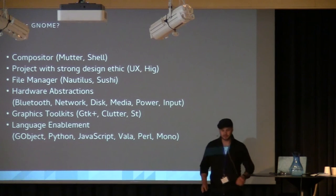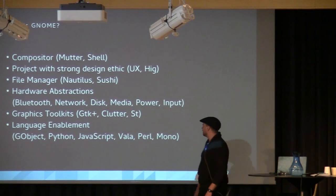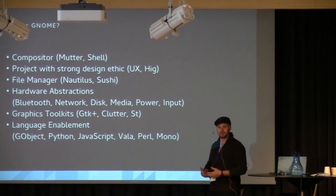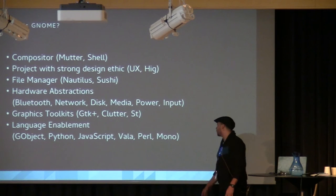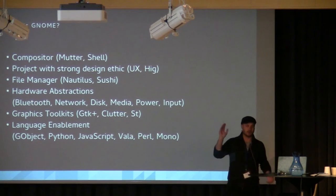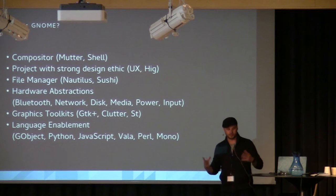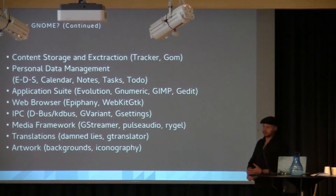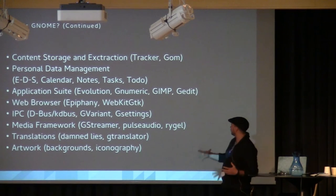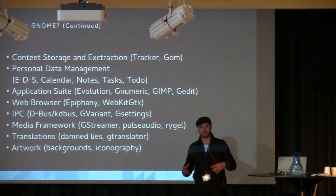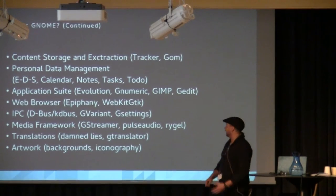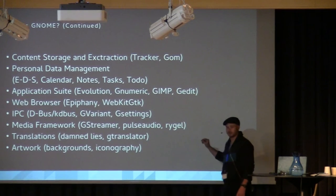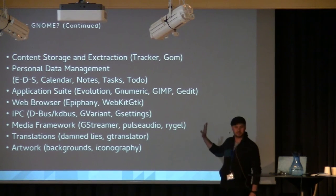We have three graphics toolkits, which hopefully will someday condense into one or two. We have language enablement — GObject is the underpinning of everything. Python integration, JavaScript, Vala, Perl, Mono — and I think there's even Rust and GNOME bindings. We're on the cutting edge of all of these. We have a content storage engine in Tracker and GOM. We have EDS, Calendars, Notes, Tasks — really the application of the Pimlicode vision from years ago.